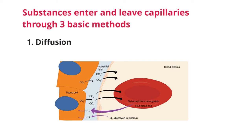Imagine diffusion like this: you spray perfume or cologne in the corner of a room — that's where it's at its highest concentration, and the rest of the room is at basically zero. The perfume will start to diffuse through the room so that others will start to smell it as it spreads from that very high concentration area outward.